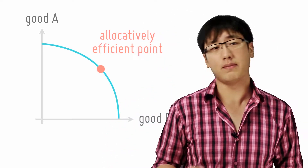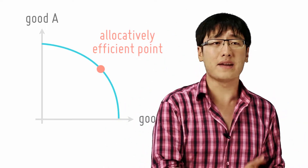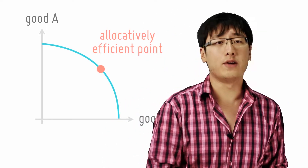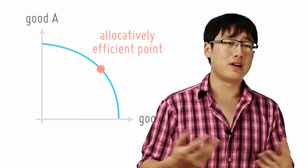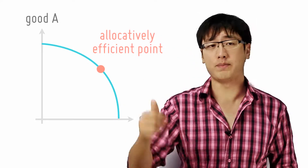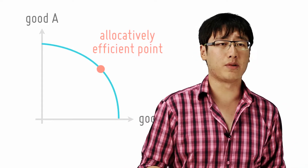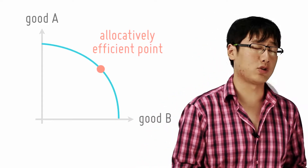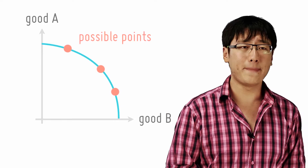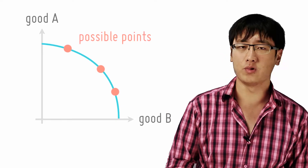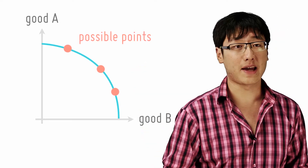If allocative efficiency means that you produce the right type and right amount of goods in a society, it should lie firstly on the PPC because you always want to produce as much as possible so that consumers can enjoy more benefits. Then it's about getting the right combination of the two goods depending on the requirements of the society.